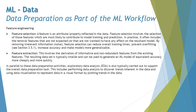Feature extraction, on the other hand, involves the derivation of informative and non-redundant features from existing features. The resulting dataset is typically smaller and can be used to generate an ML model of equivalent accuracy more cheaply and more quickly. It's an extension of feature selection — deriving more informative, non-redundant features from the existing feature set — and then putting that into the right training dataset.